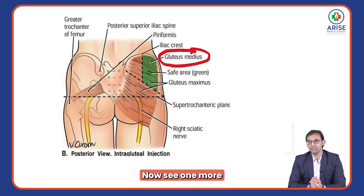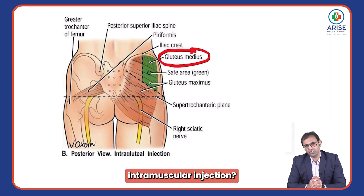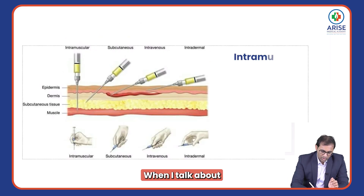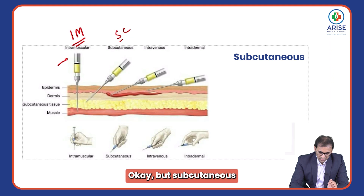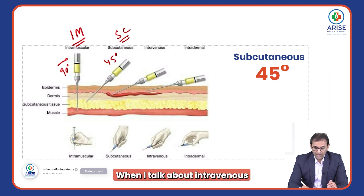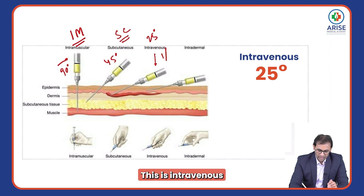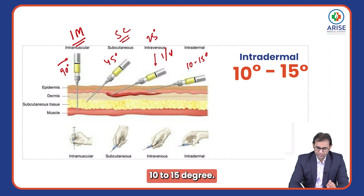What should be the angle of the needle for different types of injections? For intramuscular injection, the angle is 90 degrees. For subcutaneous injection, the angle is 45 degrees. For intravenous injection, it is approximately 25 degrees. For intradermal injection, the angle should be 10 to 15 degrees.